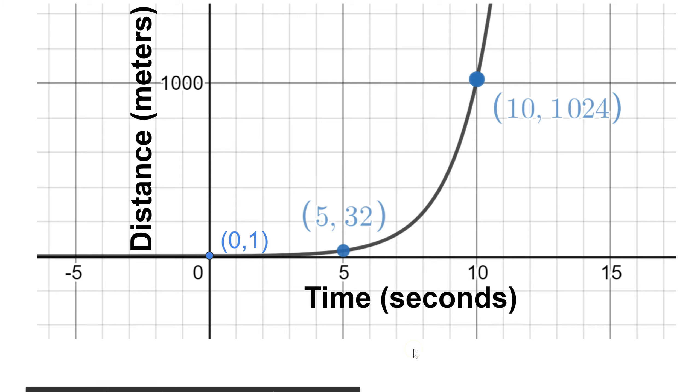If we graph that d(t) = 2^t, we will get a graph that looks like this. Three of the key points are: at 0 seconds, she had the 1 meter head start; at 5 seconds, she will have traveled 32 meters, because 2^5 is 32; and at 10 seconds, she will have traveled 1,024 meters, because 2^10 is 1,024.